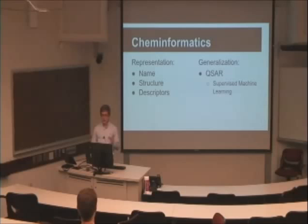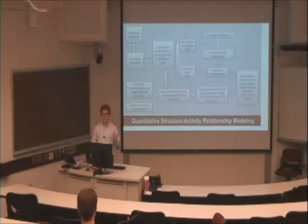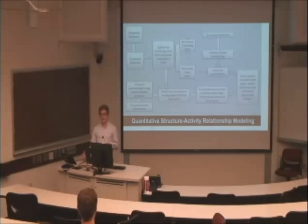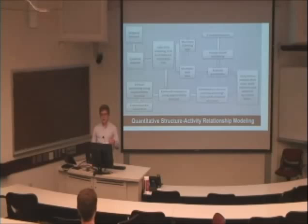To do that, we use quantitative structure-activity relationship (QSAR) modeling. The workflow is: take a dataset of compounds, generate the descriptors, and split that dataset into a modeling set and an external validation set. Then we bag the modeling set into multiple training sets and test sets, use supervised machine learning techniques to create models on the training sets, test them on the test sets, combine the best ones into an ensemble predictor, and predict the activities of the external validation set. The accuracy of that process gives a measure of how good the predictor is. We also use the predictor to identify new compounds in large databases and then test those chemicals in the laboratory.